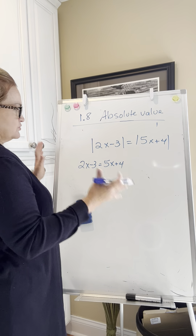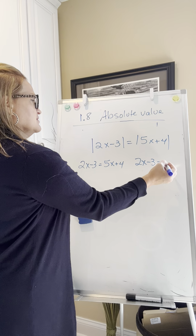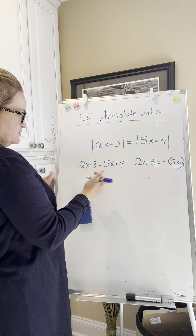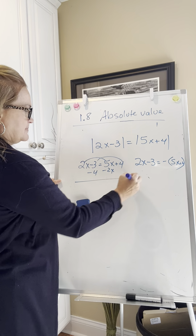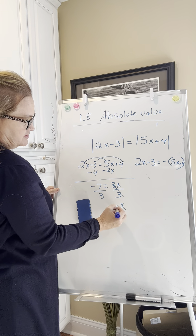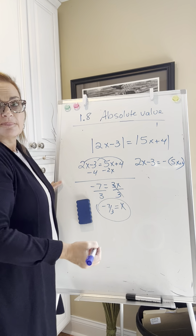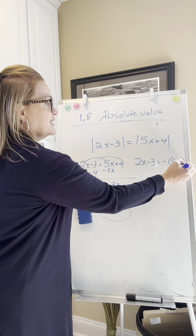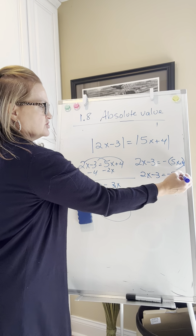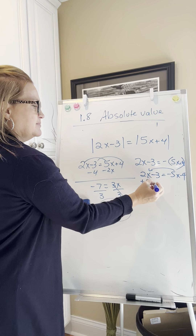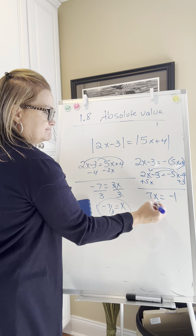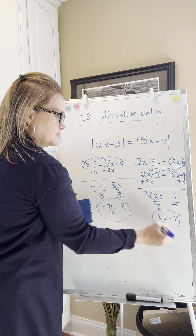Two cases again. The case where they're the same: is there a value that makes these two quantities the same? That gives 3x equals negative 7, so one solution should be negative 7 thirds. For the other side, distribute a negative sign through either side — you really could do either side, and it does come out the same. That gives 7x equals negative 1. Check your work on that, and those would be your two answers. We'll come back in the next video to finish up section 1.8 with absolute value inequalities.